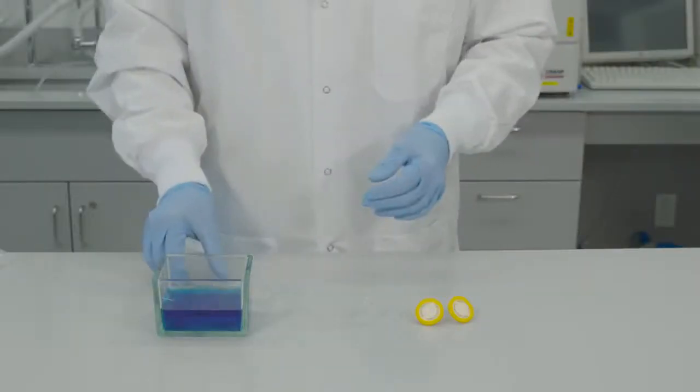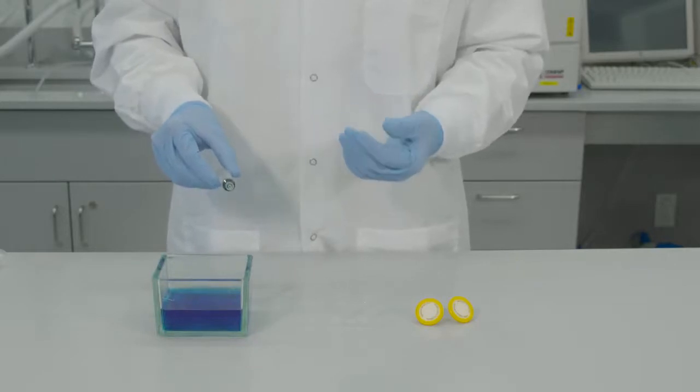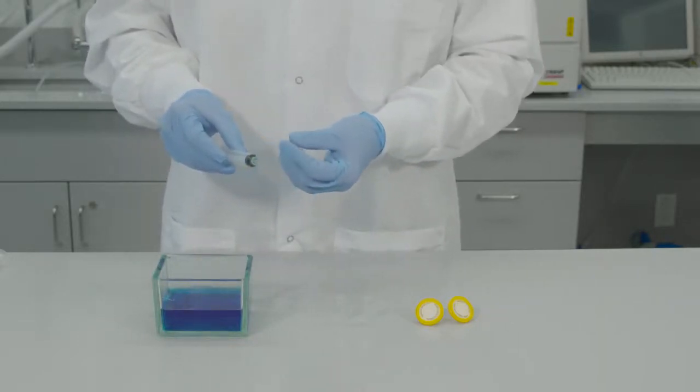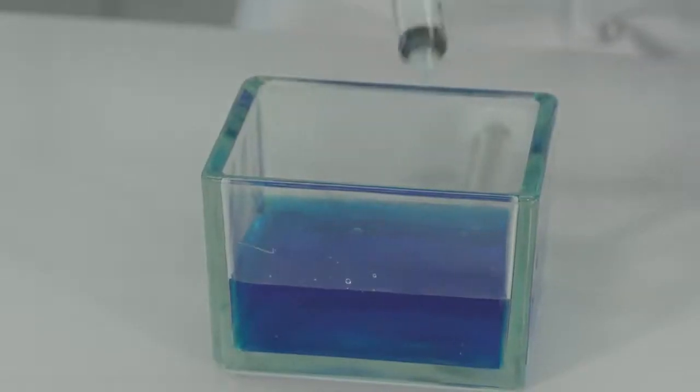Now let's go over the process for using bi-directional Millex syringe filters. There are two ways to filter a sample using bi-directional Millex filters. The first method: